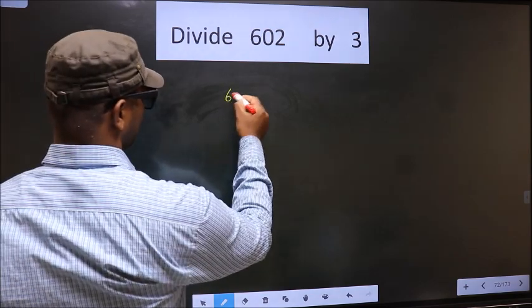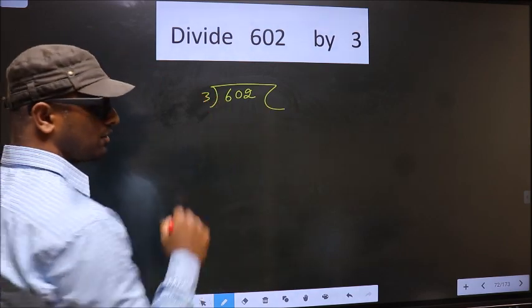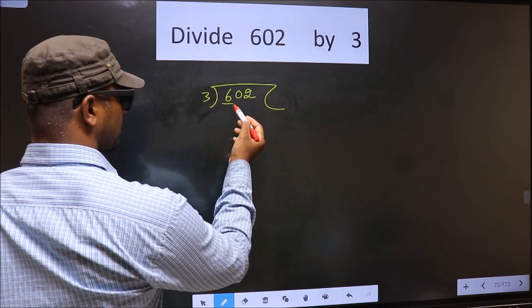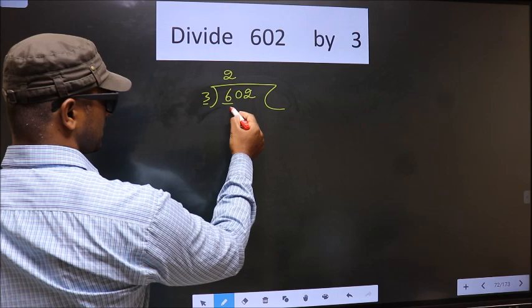That is 602 divided by 3. Now, here we have 6 and here 3. When do we get 6 in the 3 table? 3 times 2 is 6.